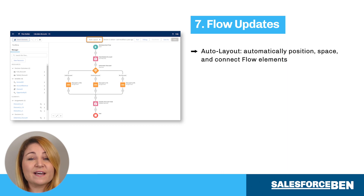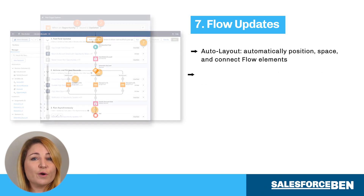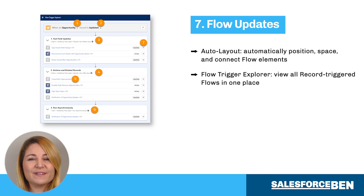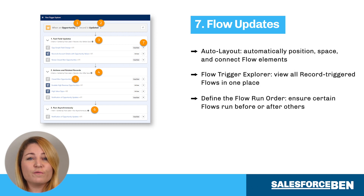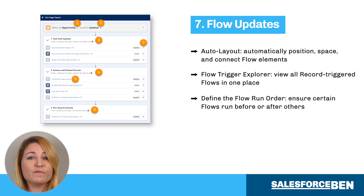Automatically position, space, and connect flow elements with Auto Layout. Flow Trigger Explorer is a new tool that allows you to view all record-triggered flows in one place — for example, you could see all flows triggered to run when an opportunity record is updated. You can now determine the running order of your flows to ensure certain flows run before or after others, and set the order for before-save or after-save flows.